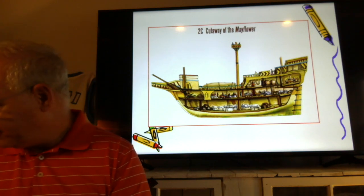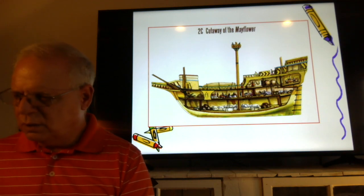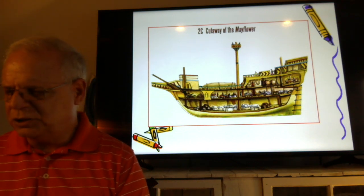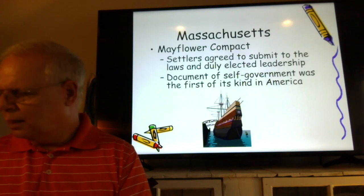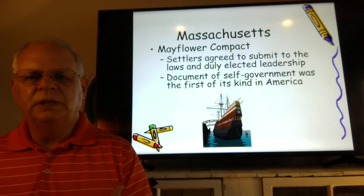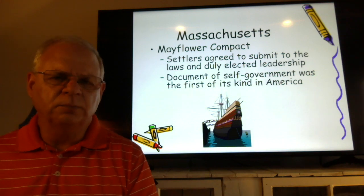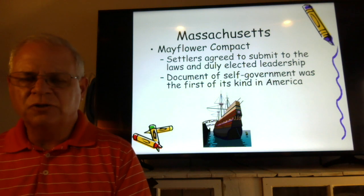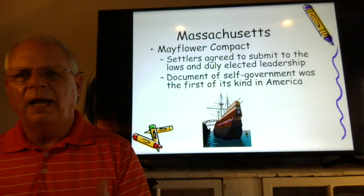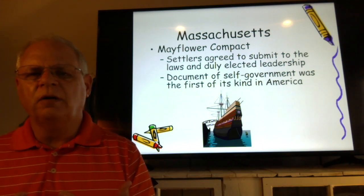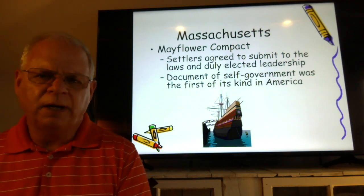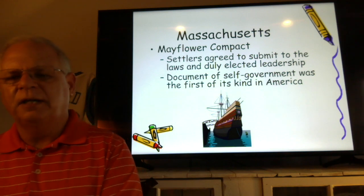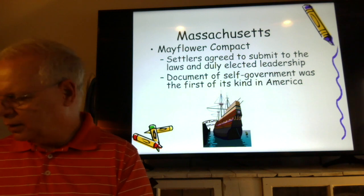Here's a cutout of the Mayflower — goods on the bottom, people on the middle level all together for quite a period of time, with no privacy. It was difficult and challenging to travel that way. Their goal had been to reach Virginia, but they were blown off course by storms and ended up in the Massachusetts area. Their charter didn't cover them outside of their intended destination, so before getting off the boat, they agreed to the Mayflower Compact — saying they'd submit to laws and elected leadership they came up with. This document of self-governance was the first of its kind in America.